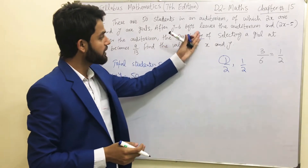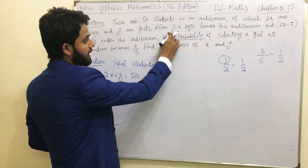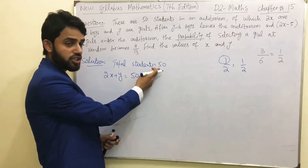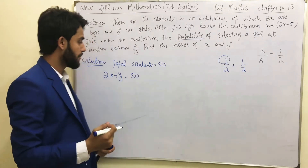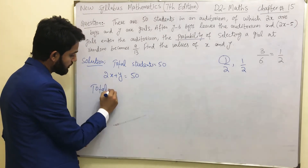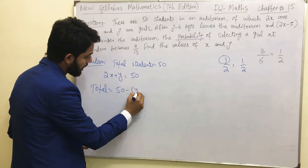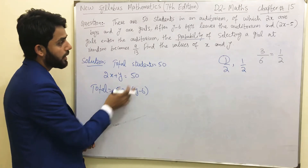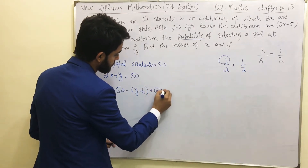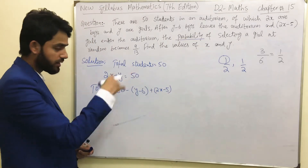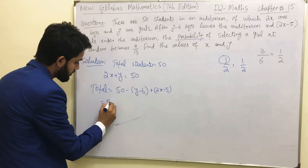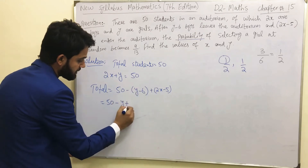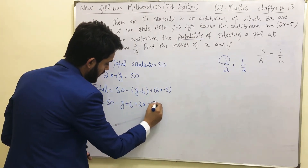Now, after y minus 6 boys leave the auditorium and 2x minus 5 girls enter the auditorium, the total number changes. The new total will be 50 minus (y minus 6) plus (2x minus 5). We subtract (y minus 6) because those boys are leaving, and we add (2x minus 5) because more girls are entering. Opening the bracket: 50 minus y, and minus minus gives plus 6, then plus 2x minus 5.